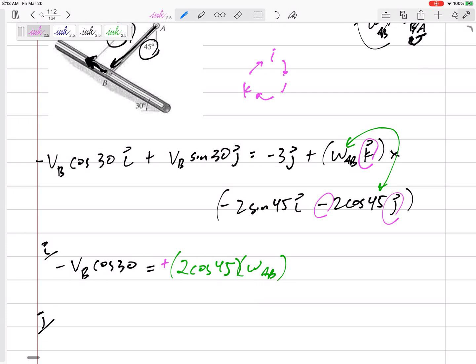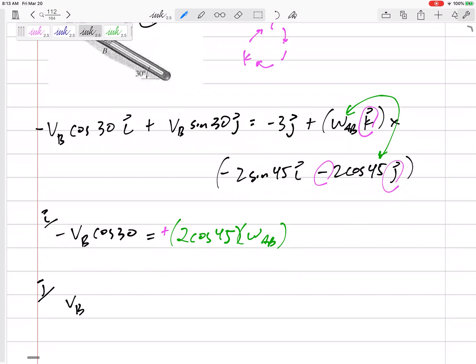Let me jump to my next equation. V_B sine 30, negative three, and then which one of these would show up in my j equation? This one, right. The k cross the i would show up in the j equation. So the magnitude would be 2 sine 45 omega_AB. K cross i is positive j, and I've got one negative, so that would be negative j right there.